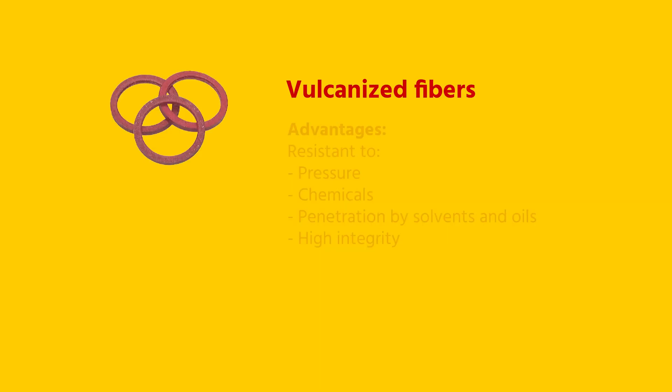Vulcanized fibers are natural fibers that have undergone heat treatment to form a hard rubber. It is one of the oldest plastics on the market, and is used in a wide range of applications, including washers and gaskets.